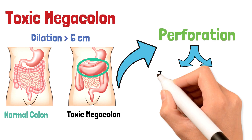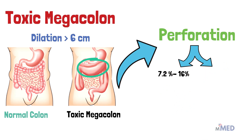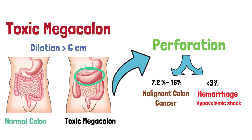Perforation can result in massive colon hemorrhage, which occurs in less than 3% of cases, but if severe it can lead to hypovolemic shock. It is also important to know that ulcerative colitis increases the risk of colon cancer even more than Crohn's disease, and the risk of cancer development is directly proportional to the severity and duration of the disease.